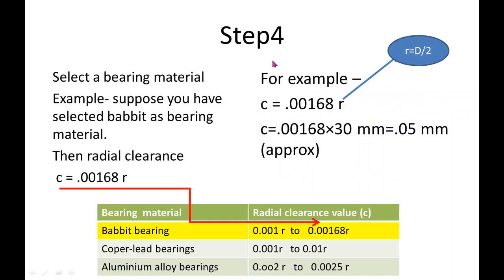In step number 4, we will assume the bearing material. For example, we can assume Babbitt bearing material for most engineering applications. Then find out the radial clearance based on the bearing material using the data from the design data book. You can assume any value of radial clearance lying between the two limits given for Babbitt bearing. The radius of the journal r is taken as 30 mm since the diameter is 60 mm, so radial clearance C is calculated as shown for Babbitt bearing.